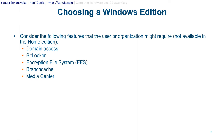When choosing an edition of Windows, consider the purpose for which Windows is used. Features such as BitLocker, encryption, and domain join functions are not available on Home edition. Consider features the user or organization might require that are not in Home edition, such as domain access, BitLocker, Encrypting File System (EFS), Branch Cache, and Media Center.